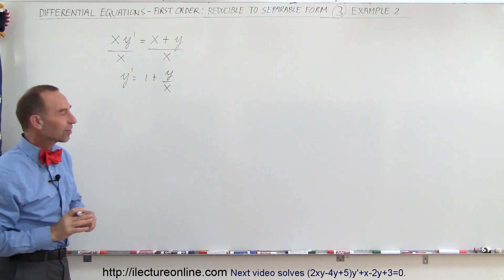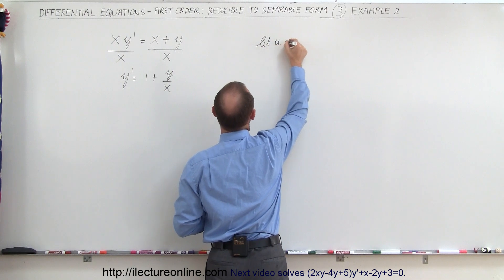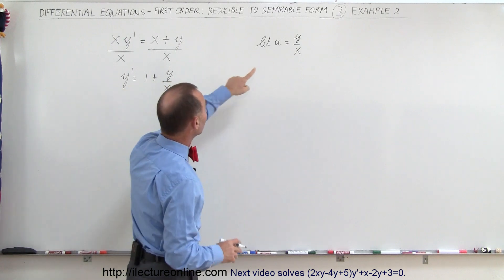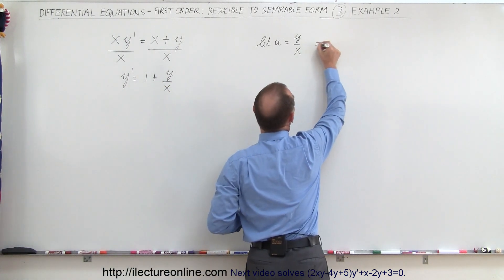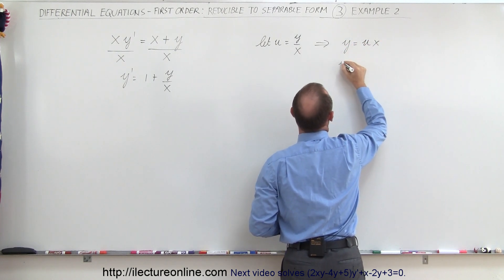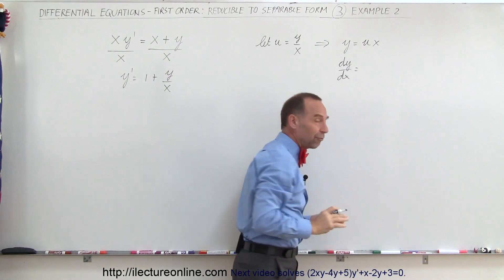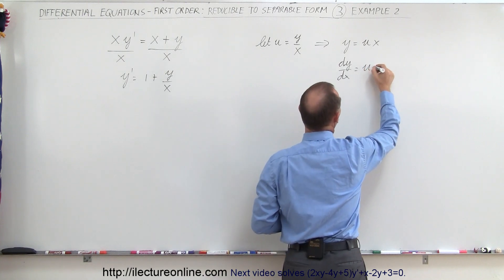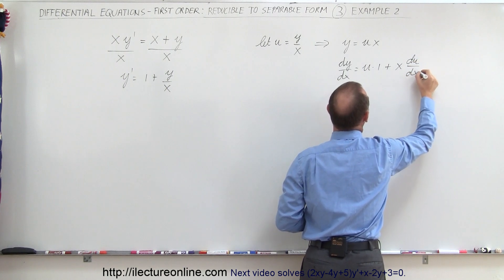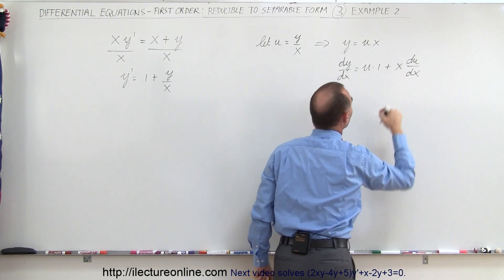We can make the substitution where y over x can be represented by u. So let u equal y over x. Then we want to find y' in terms of u. We take this equation and write it as y equals u times x, then find y' or dy/dx. Since this is a product we have to use the product rule: first times the derivative of the second plus the second times du/dx. So dy/dx can now be written as u plus x times du/dx.